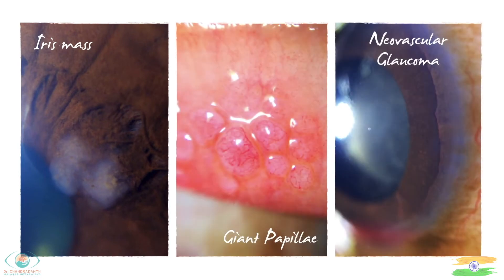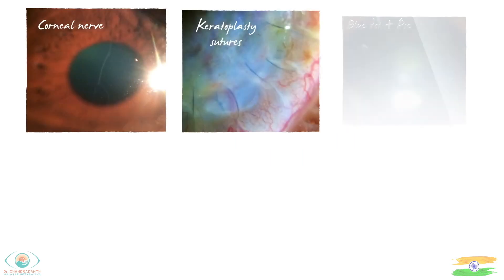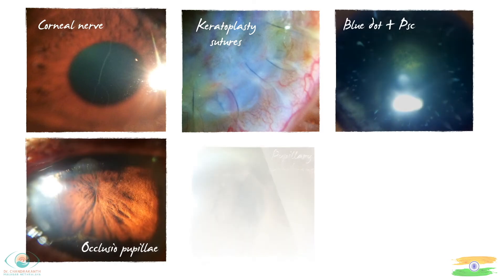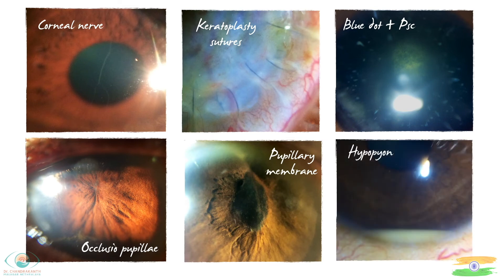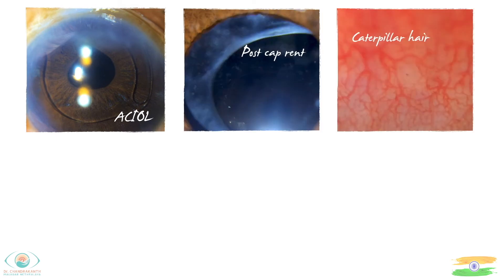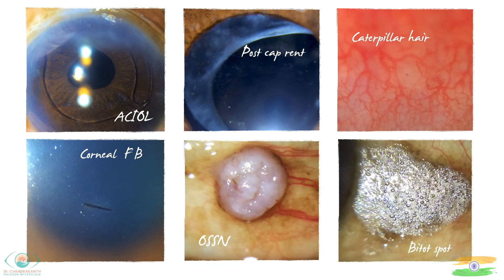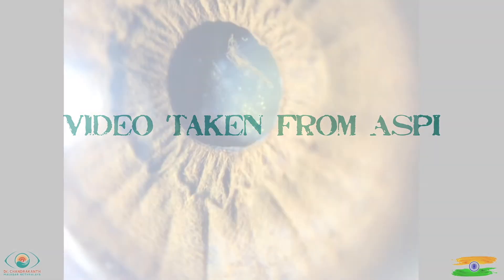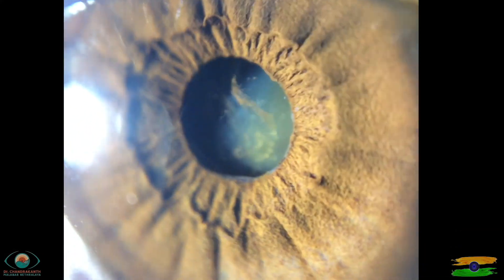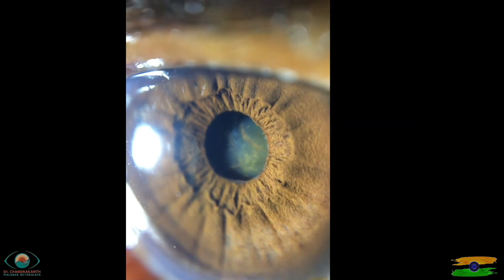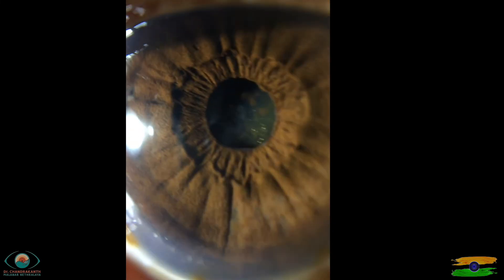Here are few images and videos taken with ASPE: iris mass, giant papillae, neovascular glaucoma, corneal nerves, keratoplasty sutures, nuclear cataract, posterior subcapsular cataract, ocular pupillary membrane, hypopyon, AC IOL, posterior capsular rent, caterpillar head, corneal foreign body, OSSN, and bite-out spot. Videos demonstrate foldable and rigid intraocular lenses.